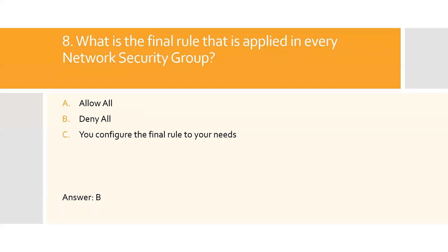Question eight: What is the final rule that is applied in every network security group? A) Allow all, B) Deny all, C) You configure the final rule to your needs. Option B is the right answer. Deny all is a safe choice — it will block all traffic that you don't specifically allow.